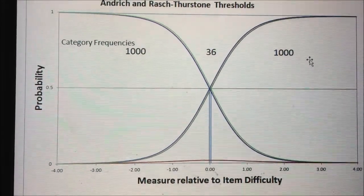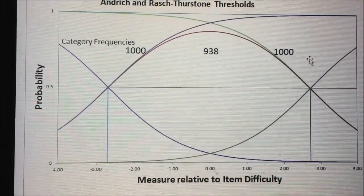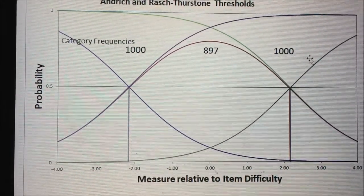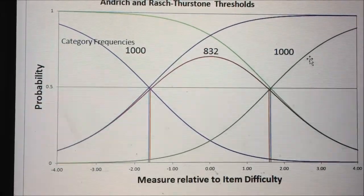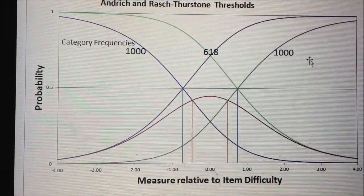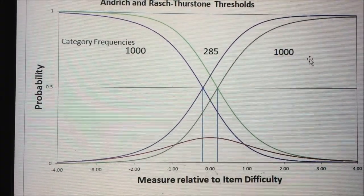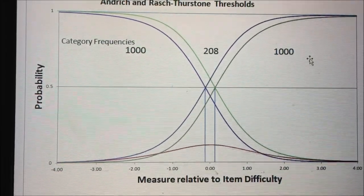So what we see is the frequency of the central category, which is the central number 930 or so, and as that number reduces the thresholds get closer together, the category interval gets narrower, and we get to the point where the central category is less likely to be observed.